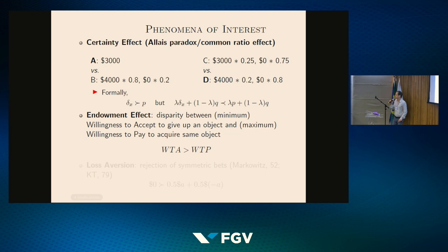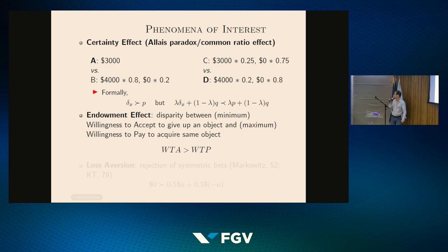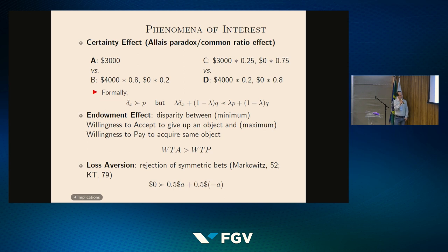The endowment effect is a gap between the minimum the individual is willing to accept to give up an object they own, and the maximum they are willing to pay to acquire the same object. The endowment effect refers to the observation that willingness to accept always exceeds willingness to pay. Lastly, loss aversion — the original interpretation due to Markowitz in 1952 and Kahneman and Tversky in 1979 — is the idea that individuals prefer getting zero for sure over a 50-50 lottery giving +A or −A dollars.